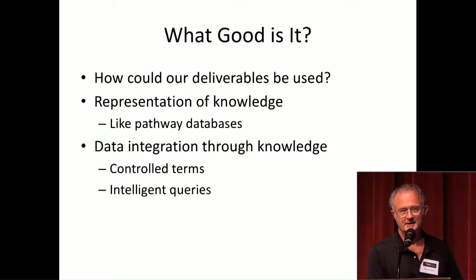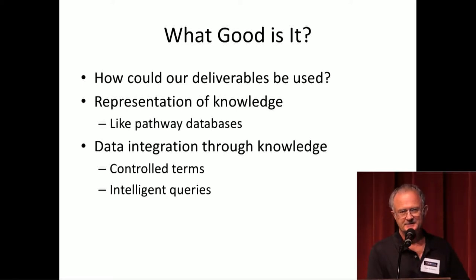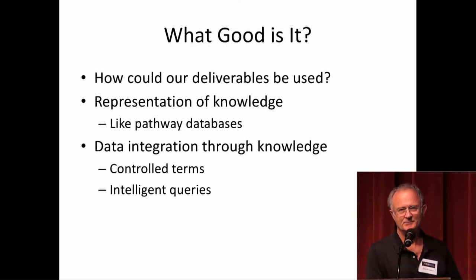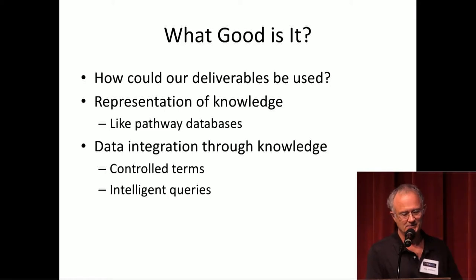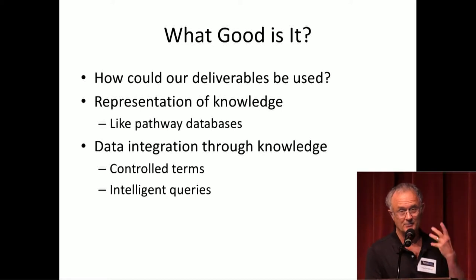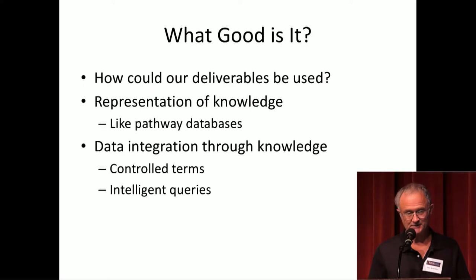One way is as a representation of the knowledge we're learning from experiments — analogous to pathway databases, which are computable theories of metabolic pathways. There are few examples of representing developmental pathways this way, so this could represent developmental pathways and what can go wrong with them. A more immediate use could be data integration through controlled terms — already in the hub — and also intelligent queries, which the hub will be working on next year.